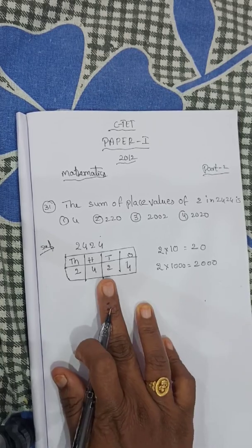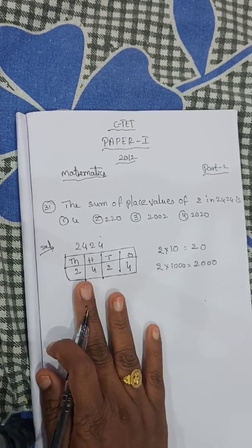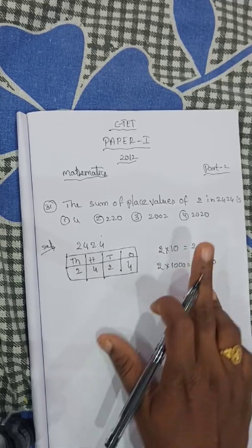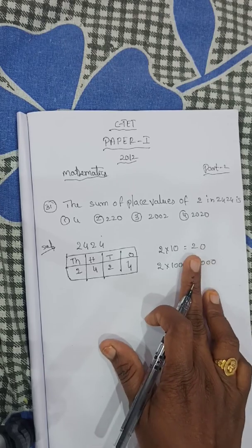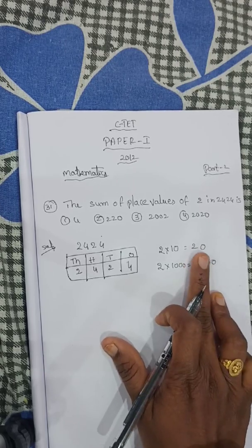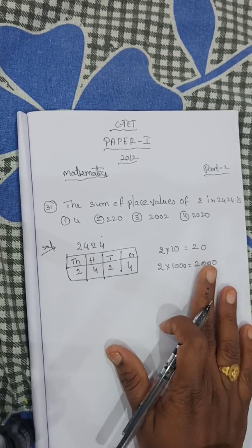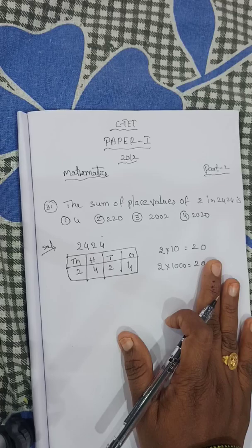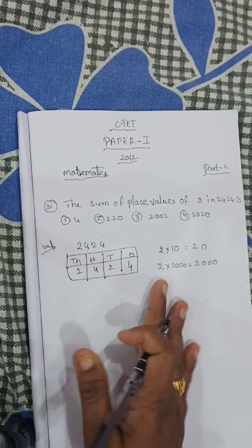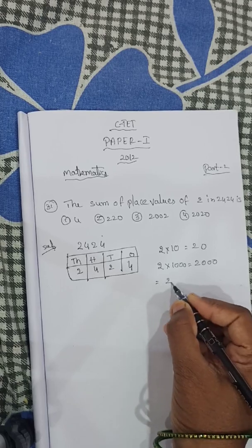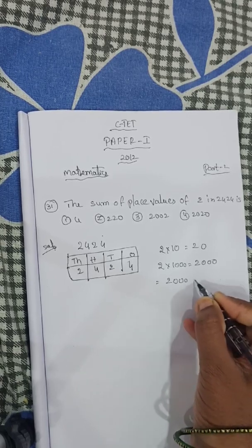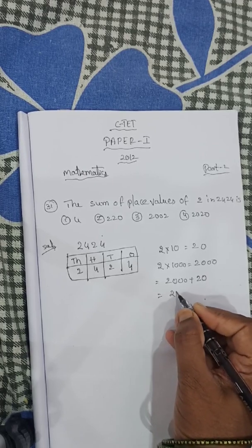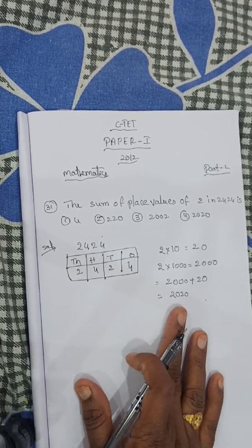Now there are 2 digits in 2 places. First, find each place value separately. After finding both place values, they will be added together. That is equal to 2000 plus 20, which gives 2020.